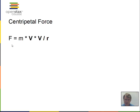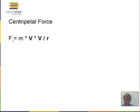Here is how we calculate centripetal force — it's an F = ma situation. The centripetal acceleration is v² divided by r. We take the mass in kilograms, multiply by the square of the velocity in meters per second, and divide by the radius in meters, giving us newtons of centripetal force.